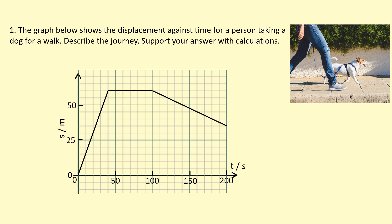On the y-axis we've got displacement, which is given the symbol s and the unit for that is meters. On the x-axis we've got time, and the symbol for that is t and it's measured in the units seconds.